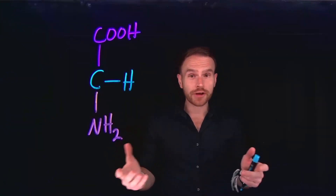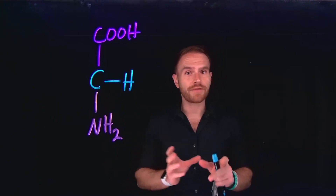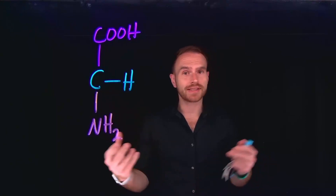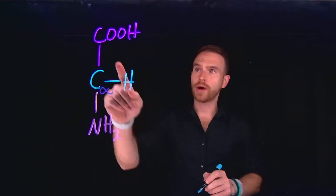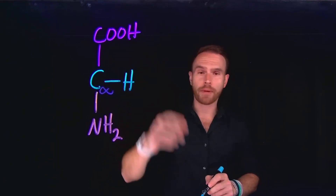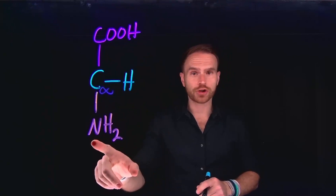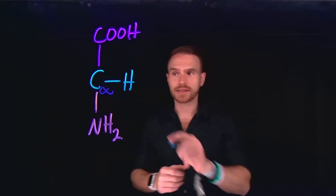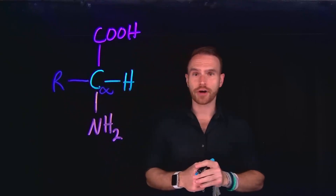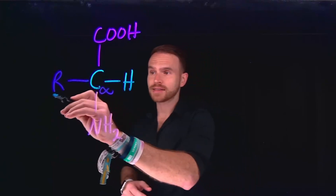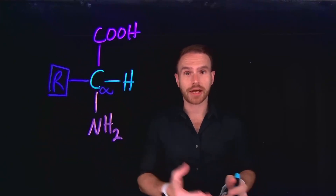Amino acids are the fundamental units that make up the proteins in living systems. All amino acids consist of a very similar structure. At the center is a carbon, which we call the alpha carbon, that is always attached to a carboxyl group or a carboxylic acid, a single hydrogen atom, and an amino functional group. The difference between all of the 20 amino acids is what is called the R group, which is on the other side of the carbon. The properties of amino acids largely depend on the nature of the R group side chain.